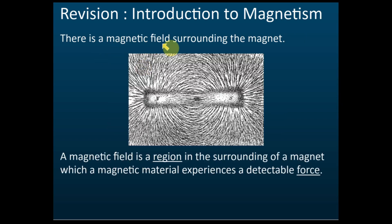There is a magnetic field surrounding a magnet. Let's say this is a bar magnet — this is the north pole and this is the south pole — and surrounding it there is a magnetic field. In SPM you need to define what a magnetic field is. A magnetic field is a region — a space or place in the surroundings of a magnet — which a magnetic material experiences a detectable force.